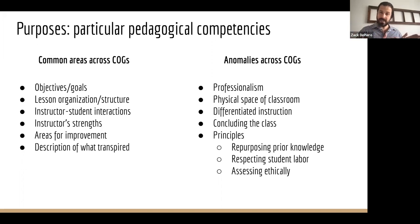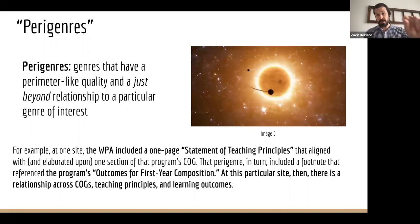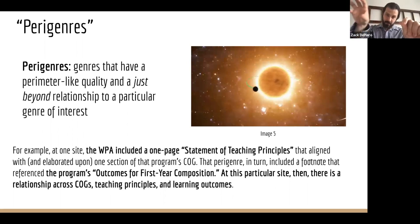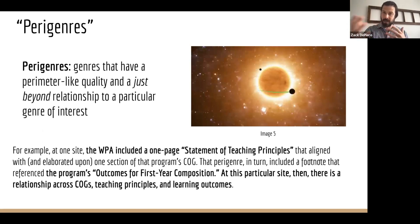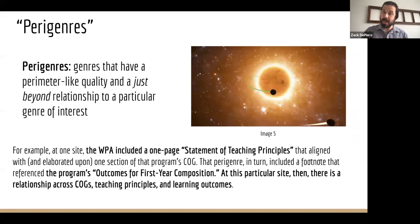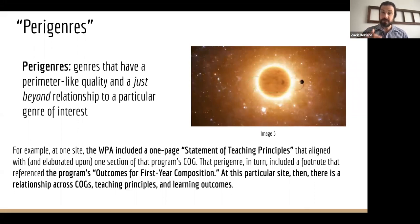Now I want to pivot to that second part of my findings and introduce the concept I'm calling para-genres. This is a finding I believe is noteworthy because it points to just how hard to pin down and enigmatic this COGS genre is. So many participants responded to my outreach with their program's COGS, but then also passed along additional supplementary material. I'm calling those materials para-genres — they have this perimeter-like, just-beyond quality, a proximal relationship to the genre, contextualizing how that COGS functions at a given site, and revealing additional information about peripheral audiences and secondary unforeseen purposes.